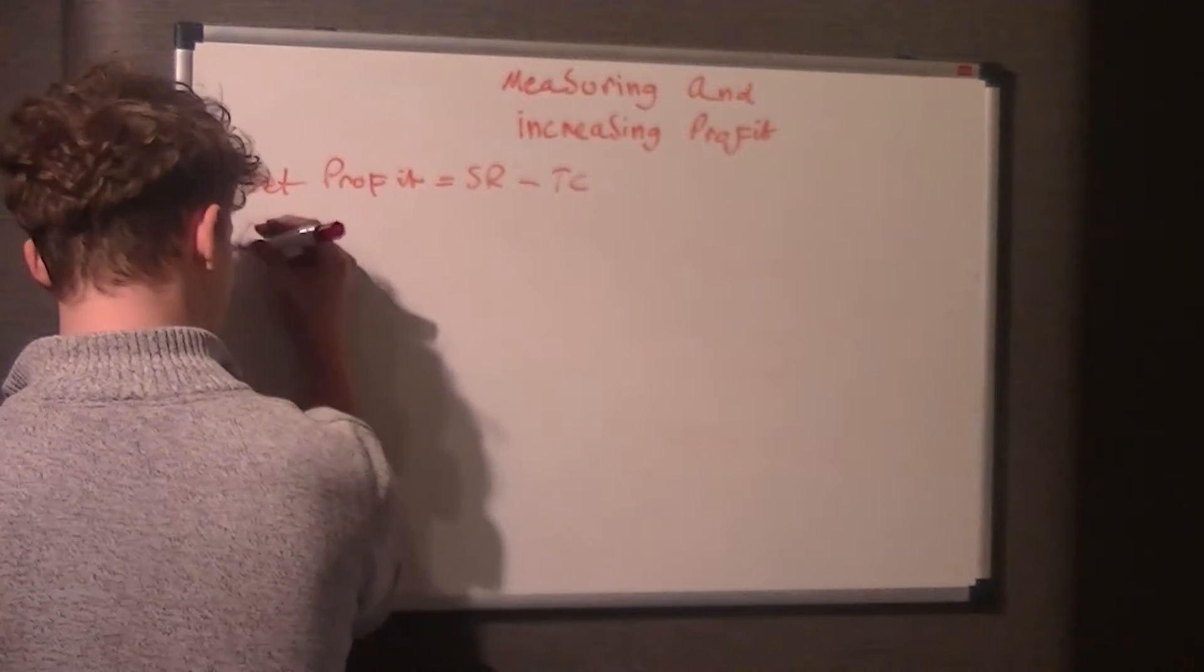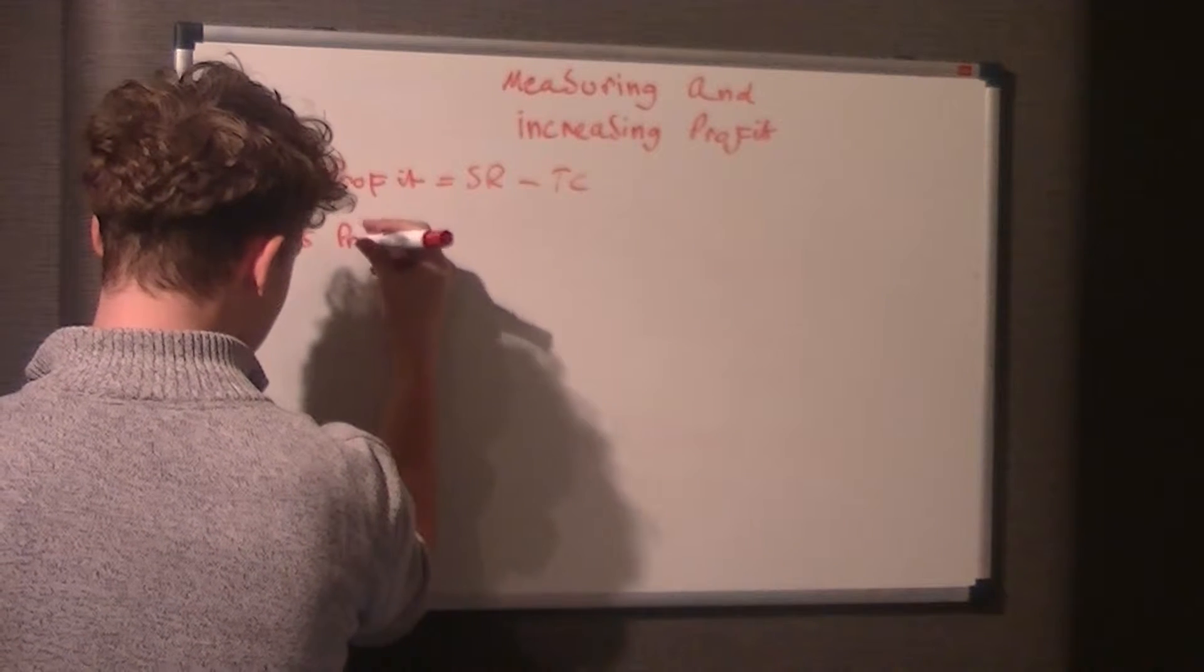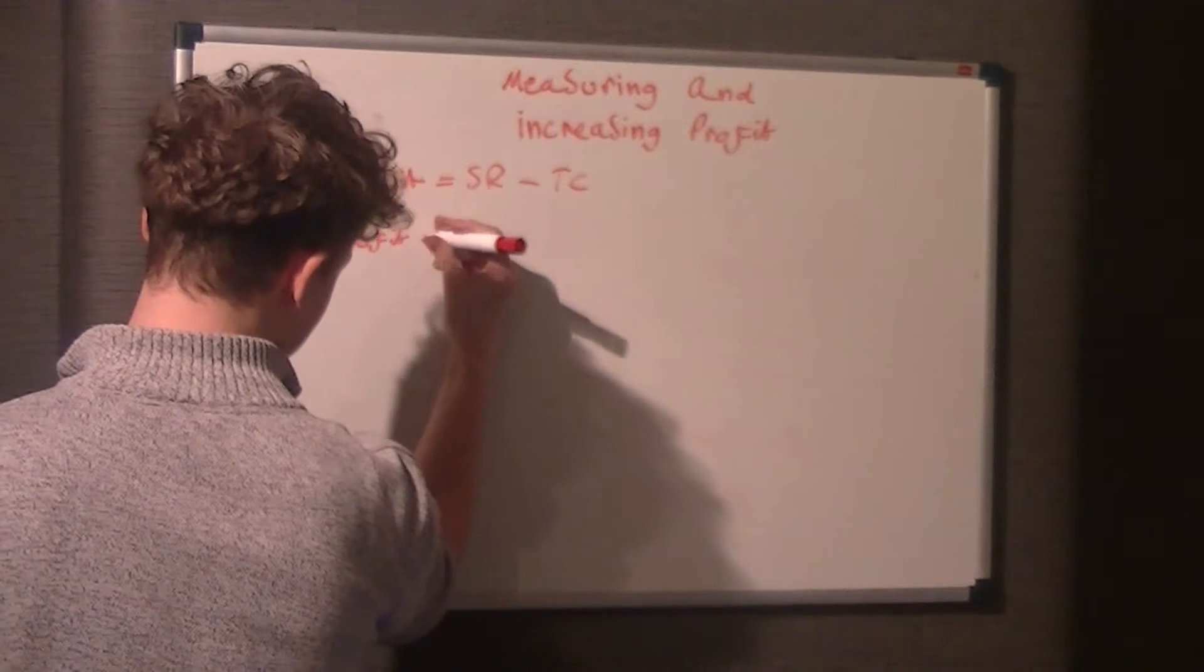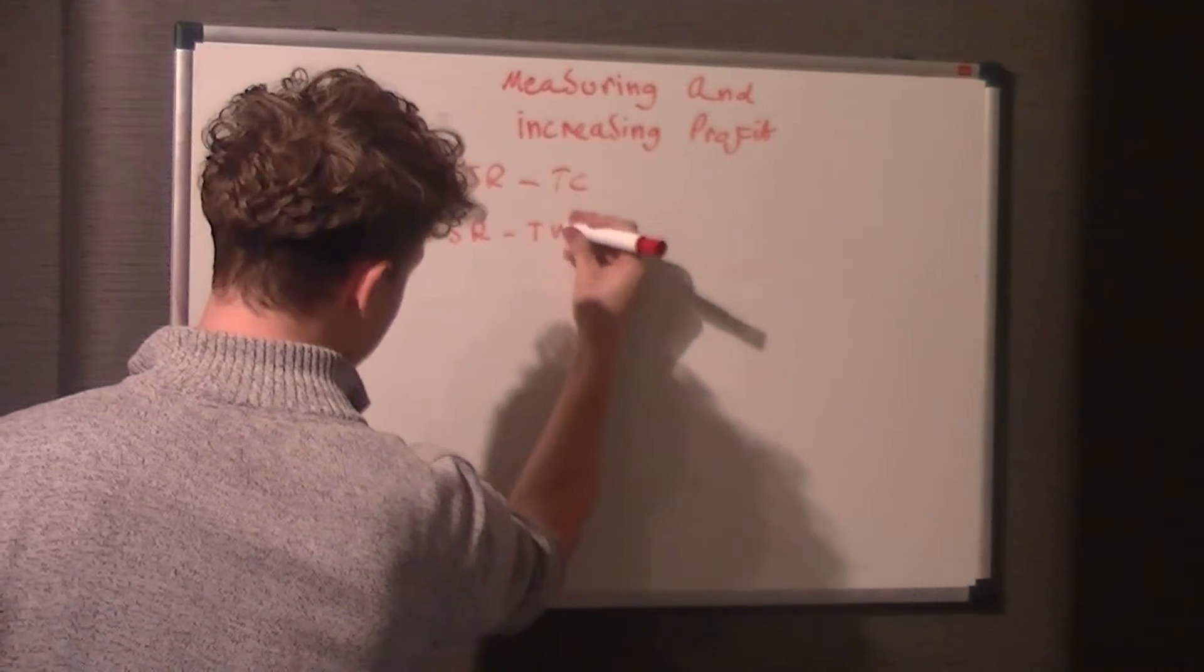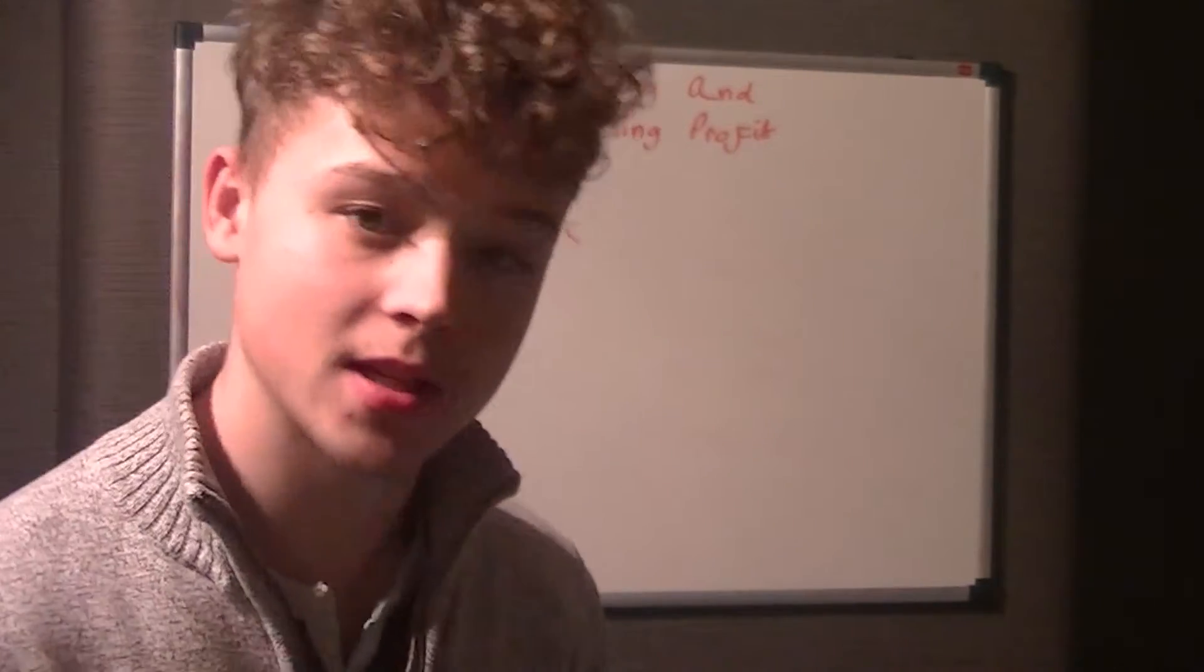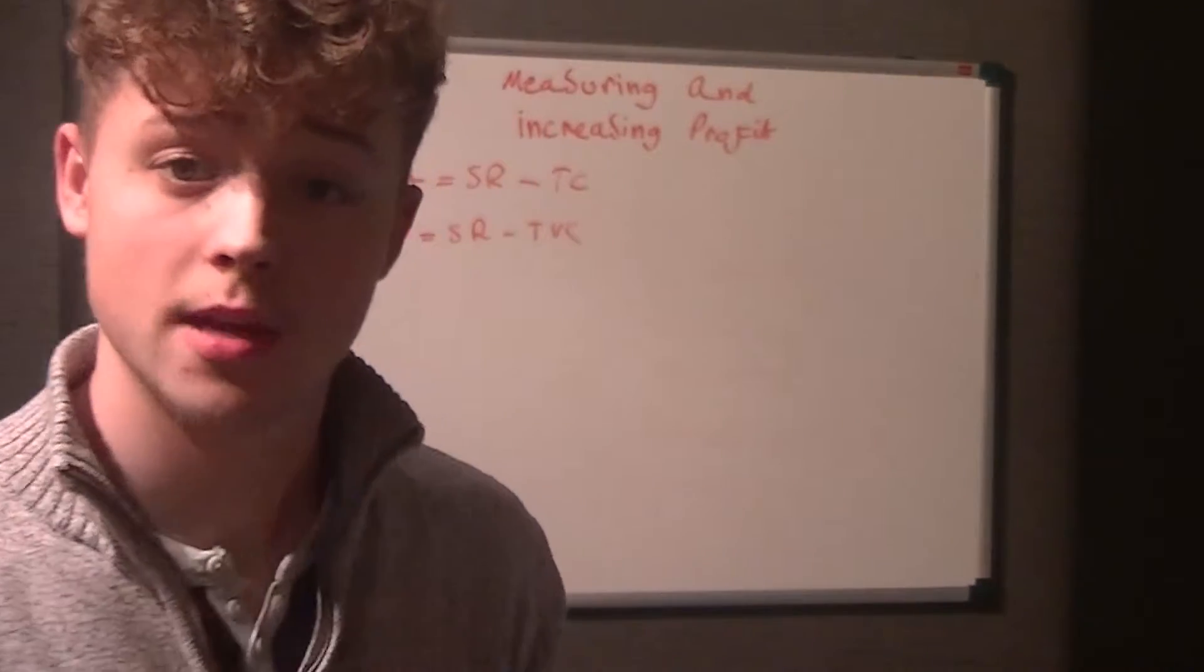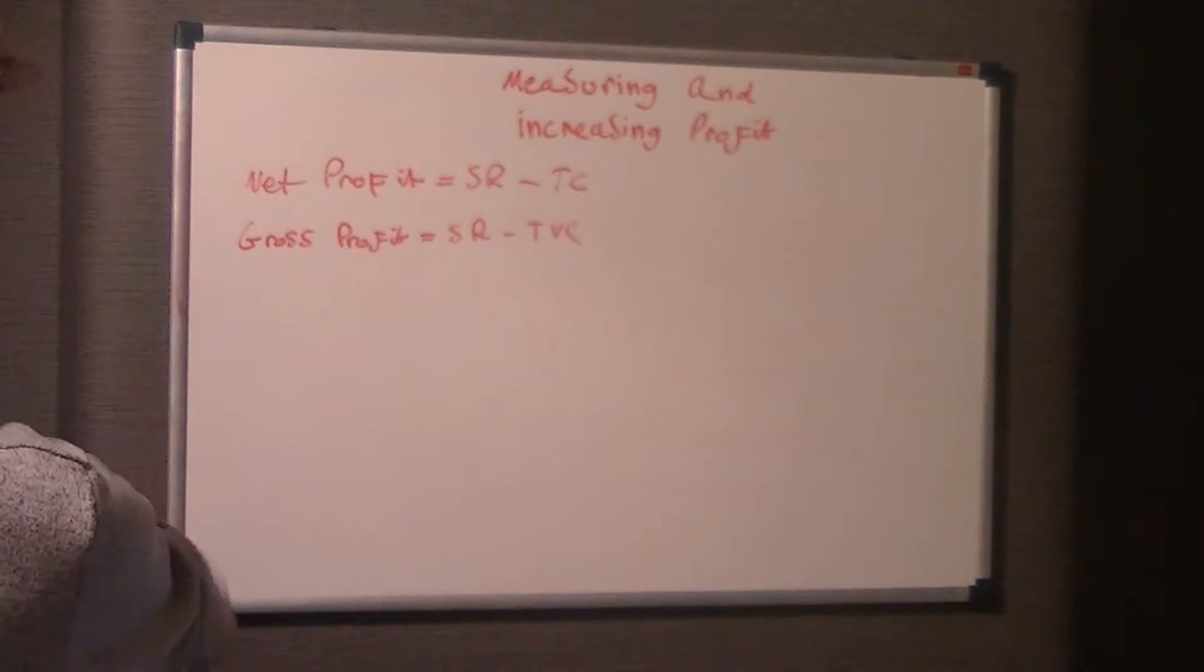Now, gross profit is sales revenue minus total variable cost. Now you may notice that total variable cost is the same as contribution. So gross profit is the same as contribution.